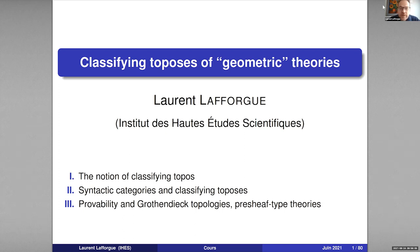My lectures will consist of three parts. First, I will introduce the sheer notion of classifying topos. I will immediately state the theorem of existence of classifying toposes, and then I will spend some time explaining the meaning of this theorem. The second part of the lectures will sketch the proof of this theorem, and I shall especially present so-called syntactic categories endowed with their syntactic topology, which allow to construct classifying toposes as toposes of sheaves on some sites associated to the theories we consider.